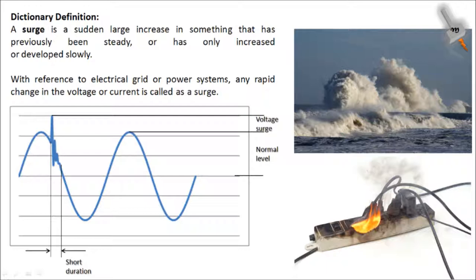A surge is a momentary change of current, voltage, or power in an electric circuit. In a power system in particular, a surge or transient is a sub-cycle over-voltage with a duration of less than half a cycle of the normal voltage waveform. A surge can either be positive or negative polarity, and can be additive or subtractive from the normal voltage waveform.